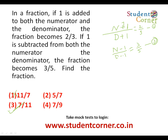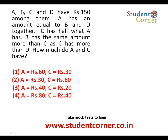Next model: A, B, C, and D have 150 rupees among them. The condition is that A has an amount equal to what B and D together have. C has half of what A has.